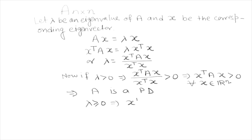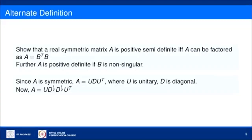Similarly, if lambda is greater than or equal to 0, this means x transpose A x is greater than or equal to 0 for all x in R^n — note that x is an eigenvector so it is a non-zero vector. In this way we can prove that if all the eigenvalues are non-negative then the matrix is positive semi-definite. An alternate definition for positive definiteness: a real symmetric matrix A is positive semi-definite if and only if A can be factored as A equals B transpose B. Further, A is positive definite if B is non-singular.